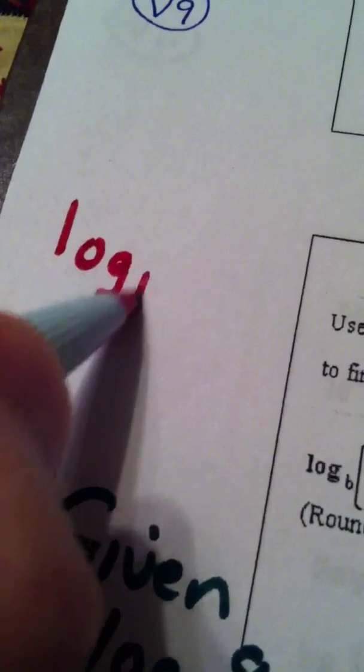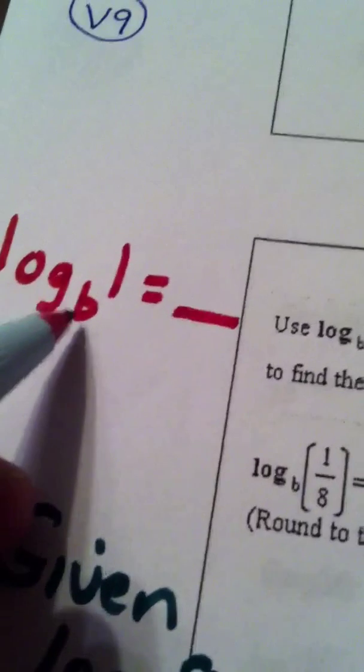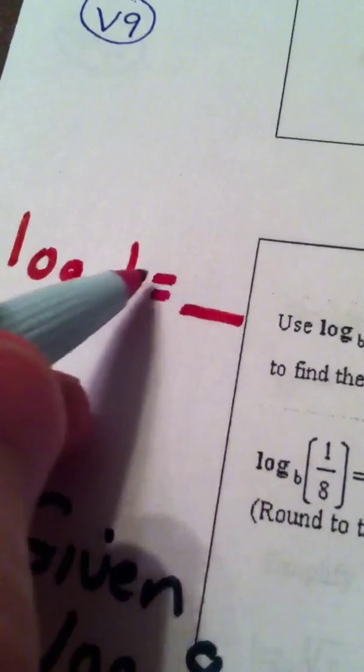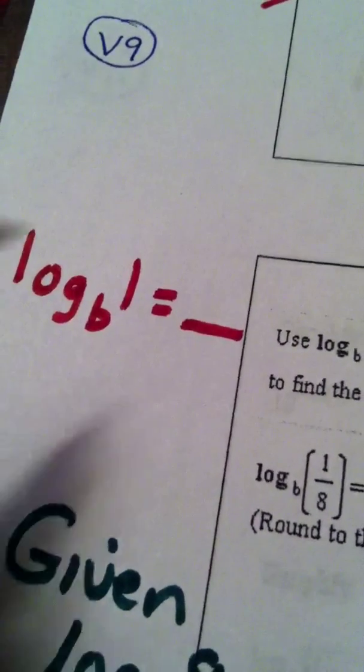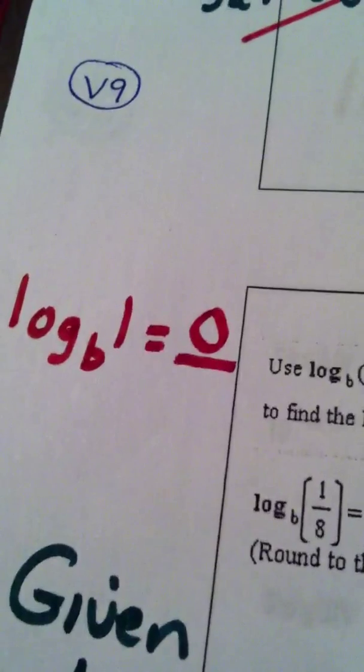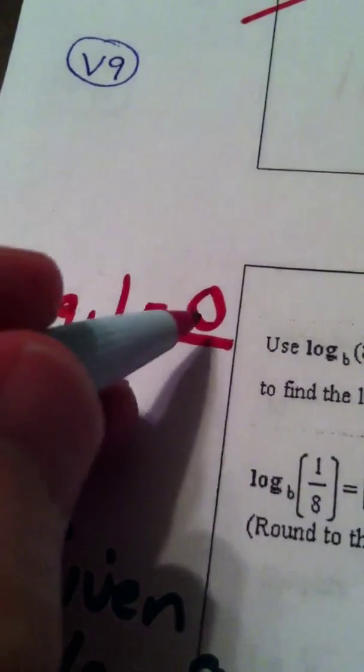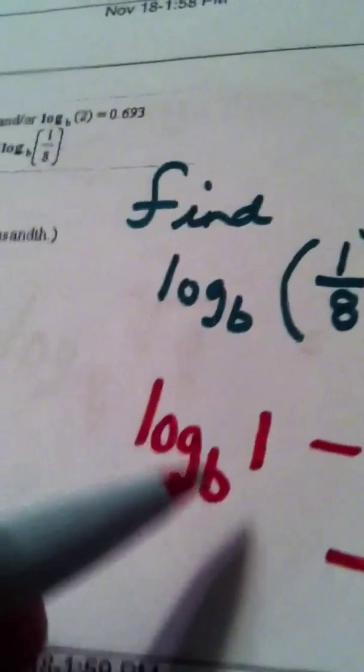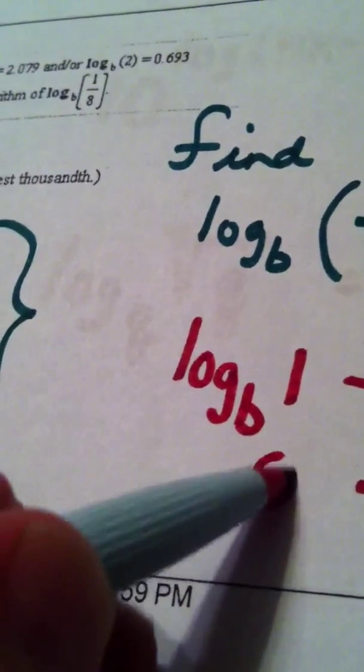What's the log base b of 1? Well, let's see. b to what power gives me 1? 0. So what's the log base b of 1? The log base b of 1 is 0.